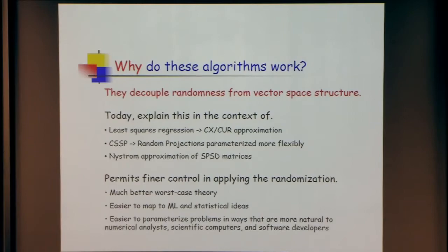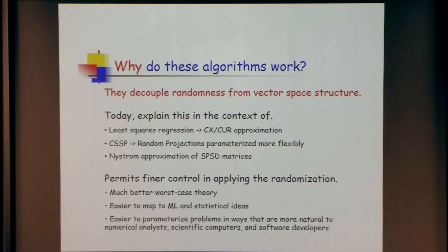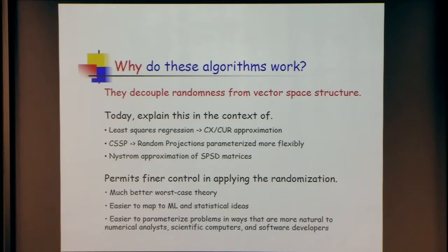The algorithms work because they decouple the randomness from the vector space structure. You saw an example of this with the CX and CUR decomposition Petros described. Choosing good columns with unitarily invariant norms boils down to something like least squares. If you want to go from K log K to exactly K columns, you use a slightly stronger structural result, and the analysis boils down to the same thing — in many cases, a matrix multiplication result.